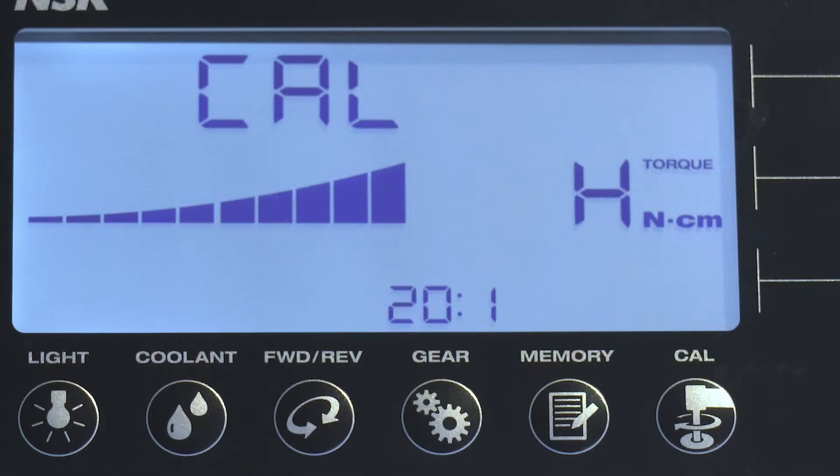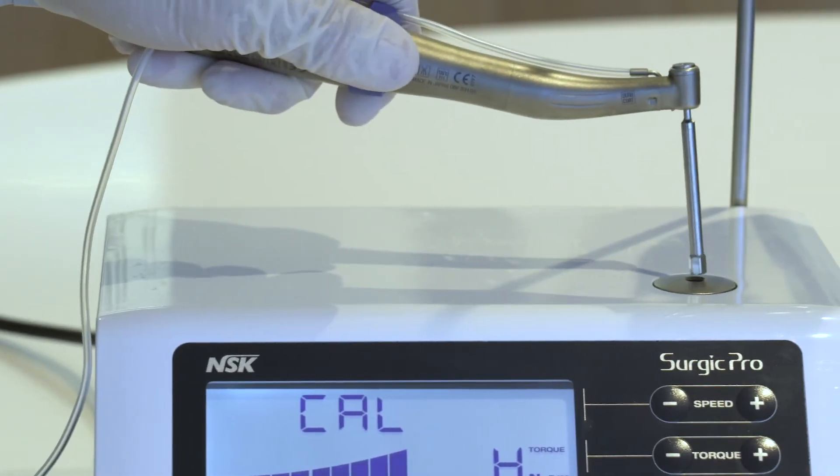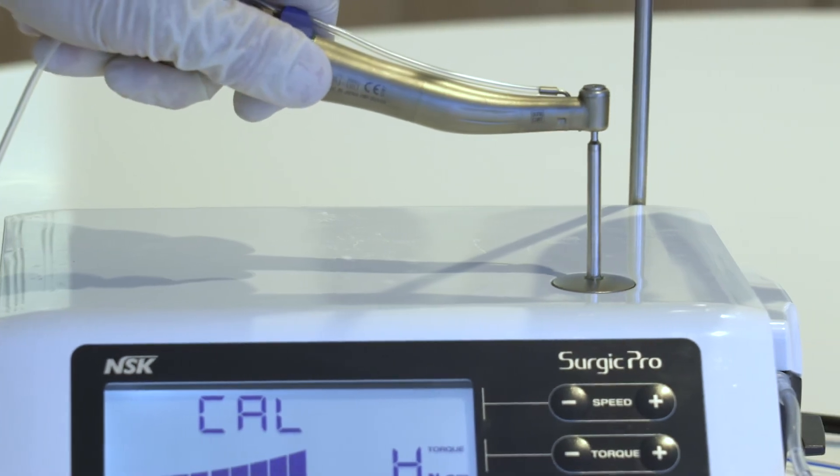Load calibration. Torque display H. Make sure H is displayed on the torque display. Insert the calibration bird in torque load. Push the cal key.